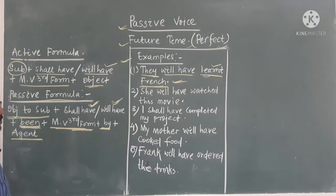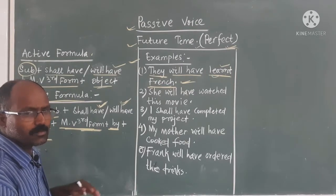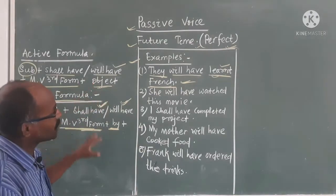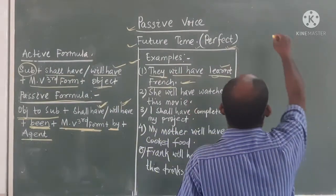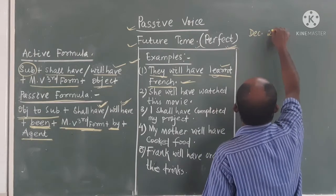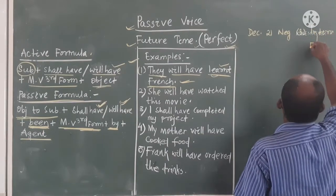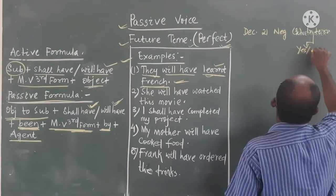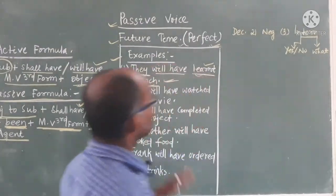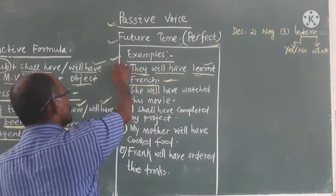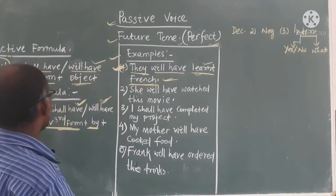After the main verb third form, 'by' will come, followed by the agent. Agent means the subject is turned into object form — 'they' becomes 'them'. There are four sentence types: declarative, negative, interrogative (yes/no), and WH-question. These will be repeated again and again, so remember them well.